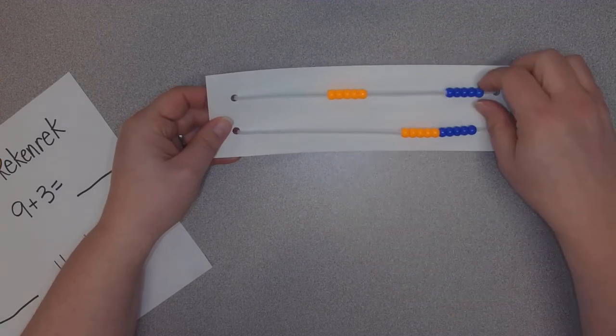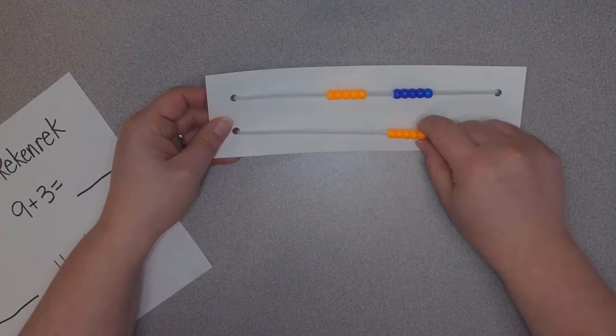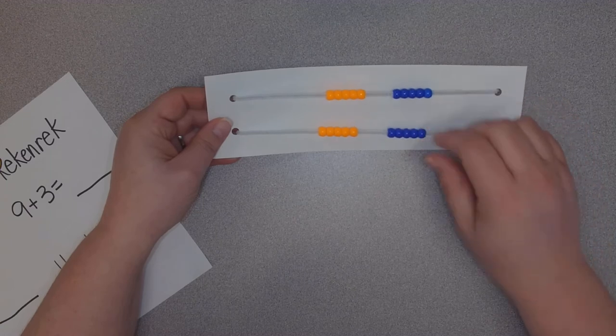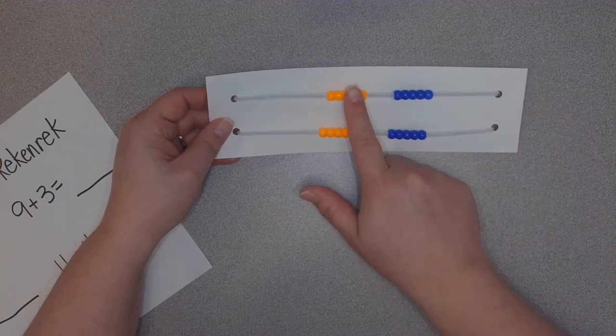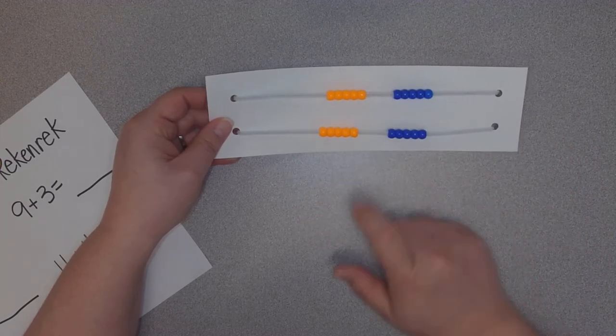We have five of one color, five of another color, five of one color, five of another color. So we have five, ten, fifteen, twenty.